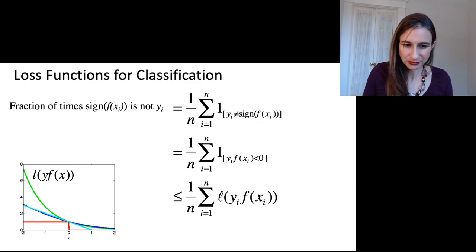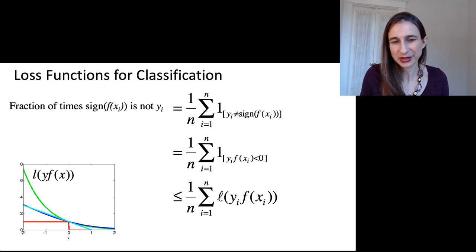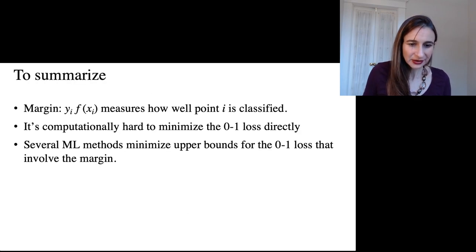So just to recap, we started with the misclassification error and then we changed it to be a function of the margin. And then we upper bounded it by a loss, which is also a function of the margin.